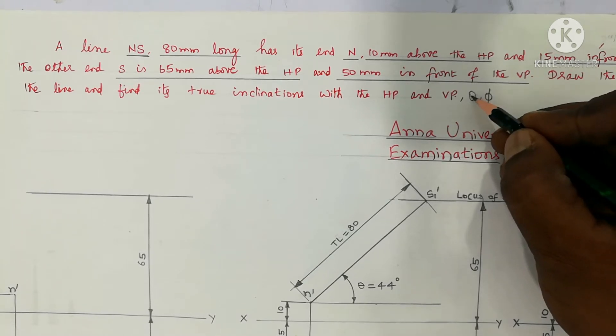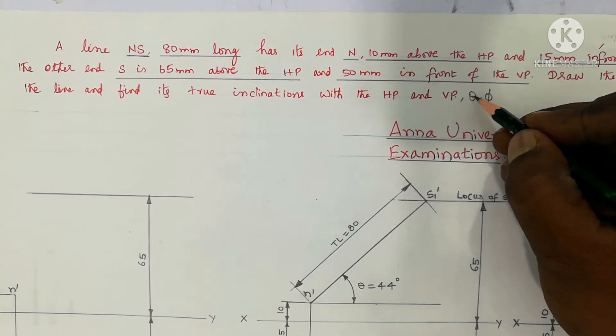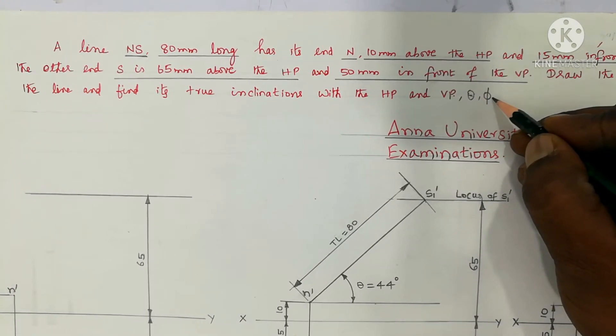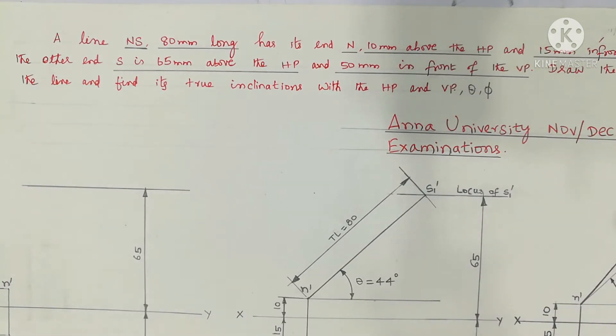So theta, under the x-ray line - the reference line called x-ray line - the angle is theta. The angle inclined to VP is phi. In rectangular projection, after drawing the final front view N dash S dash and NS in the top view.